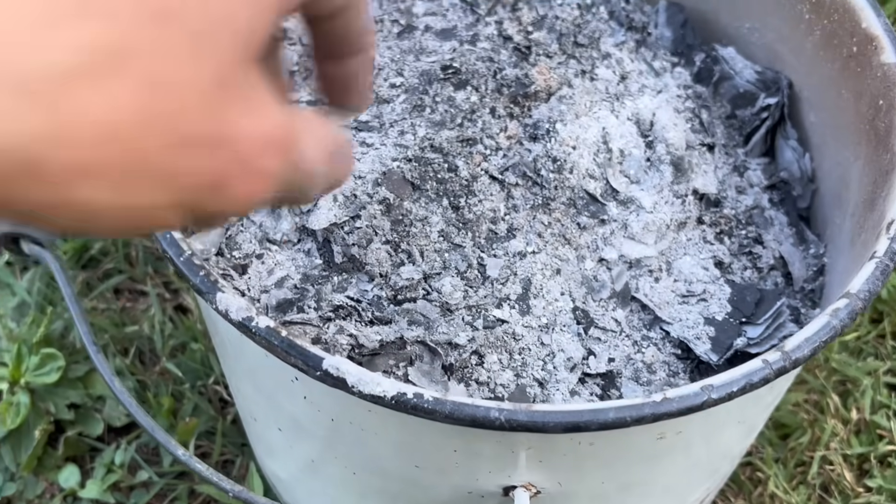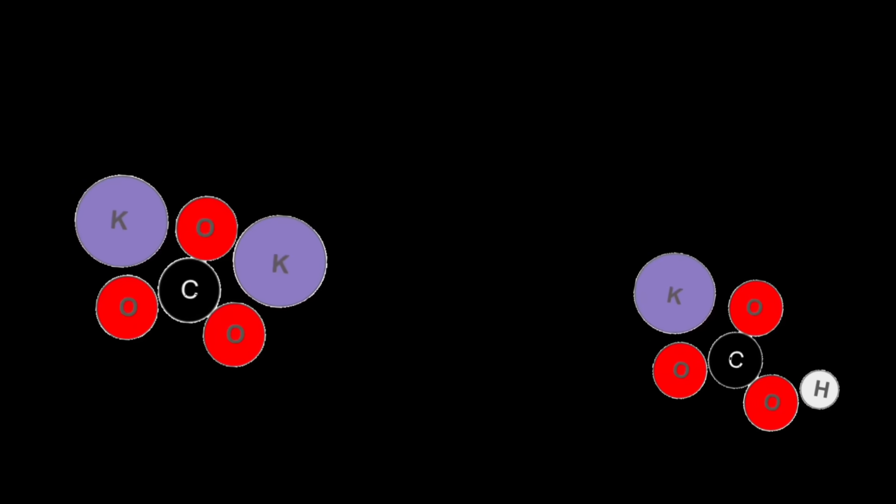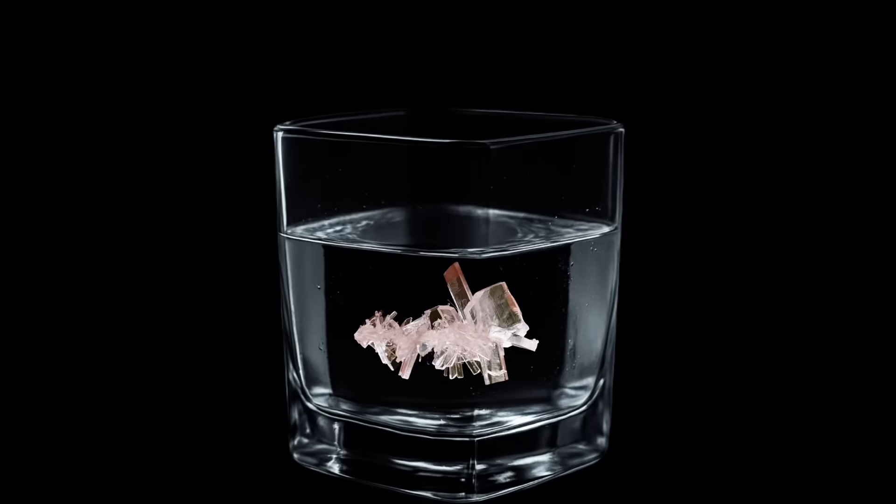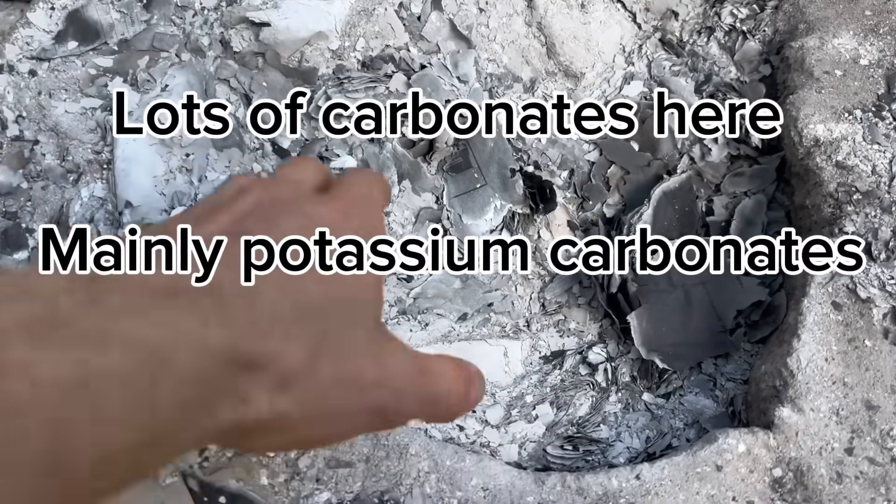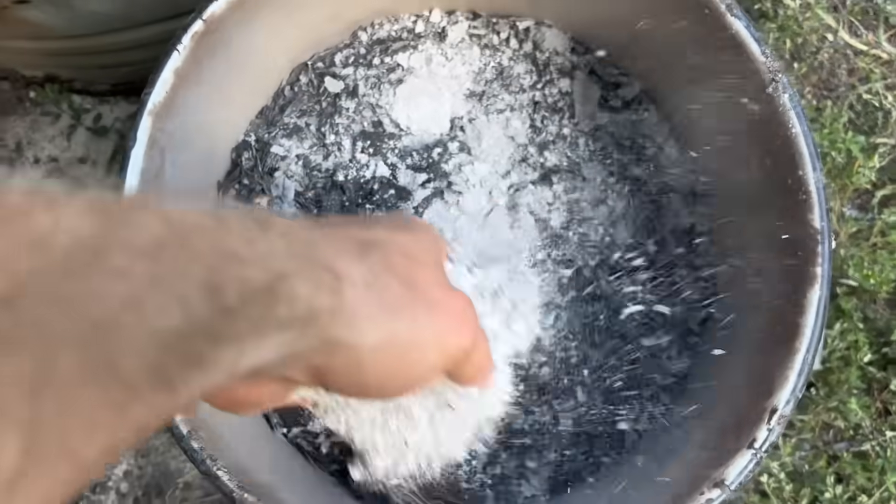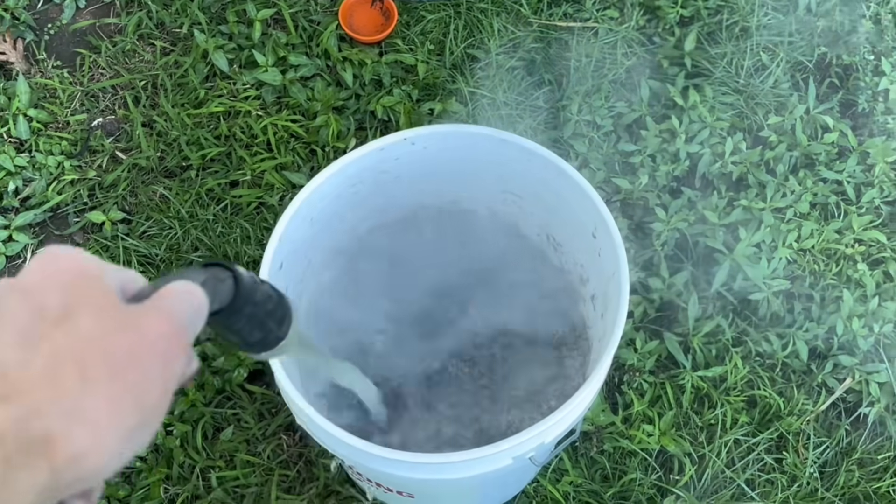The main compounds that I'm interested within this ash though, are potassium carbonates. These compounds are water soluble and grow nice crystals. Thankfully though, there are a good bit of potassium carbonates within ash. So all I have to do to extract the majority of it is simply soak the ash in water to leach out all the water-soluble carbonates.